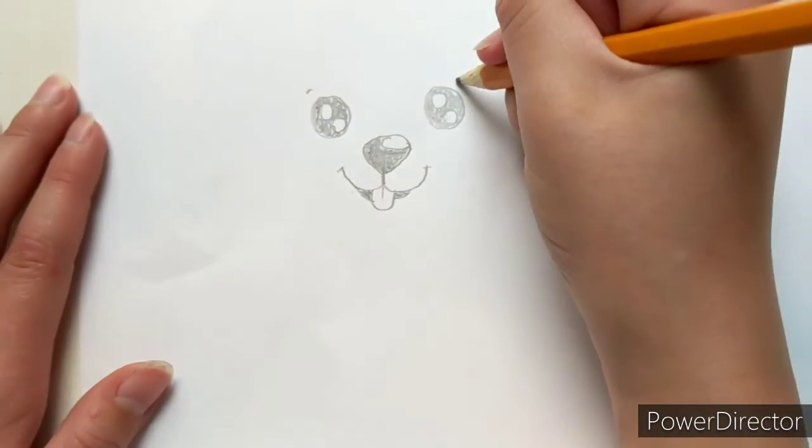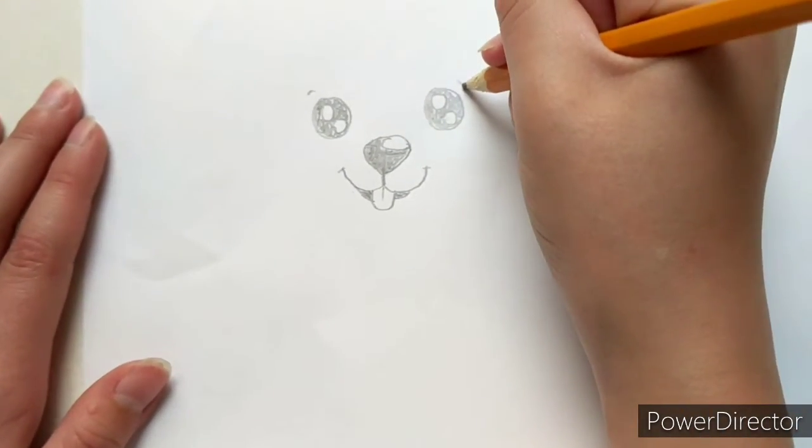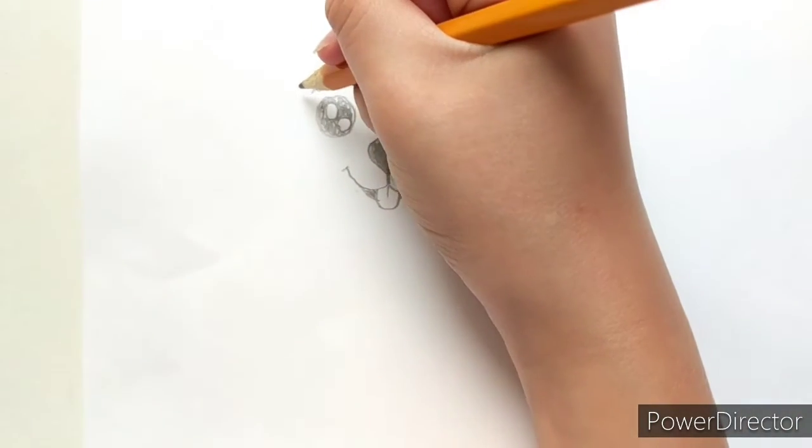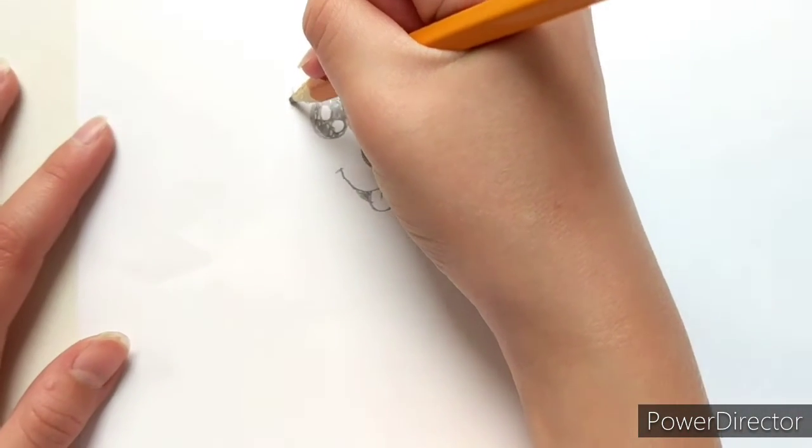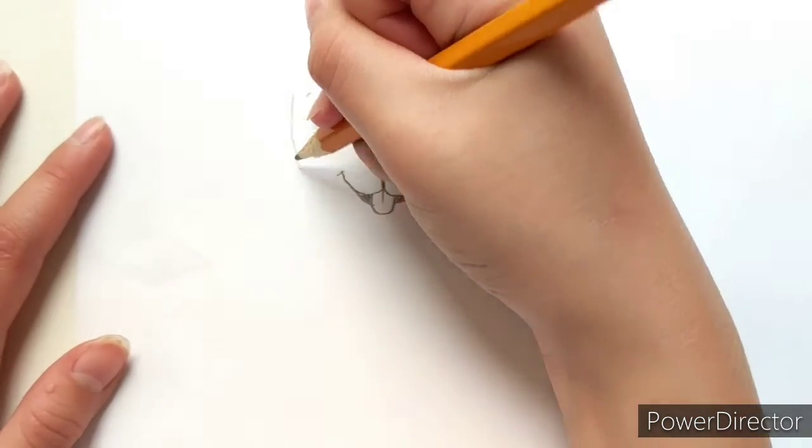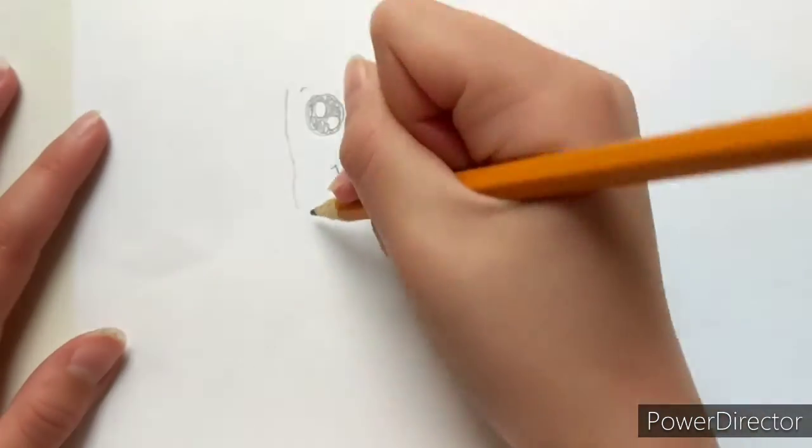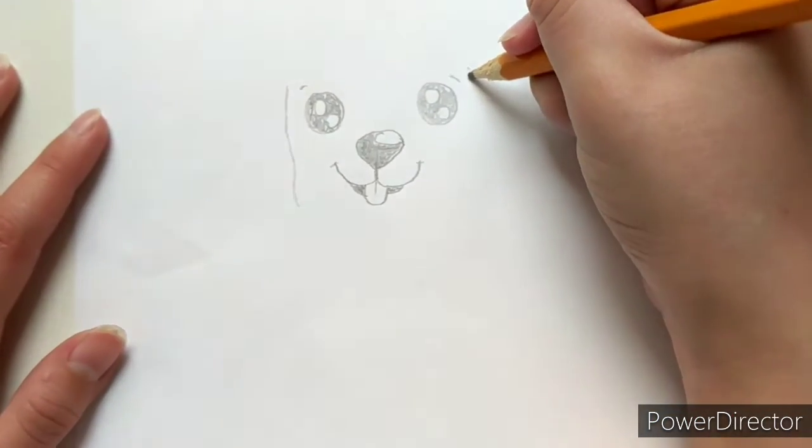Now give the dog a little bit of an eyebrow and then let's do the ears. So start near the eye, go in and come back out and do that on both sides.